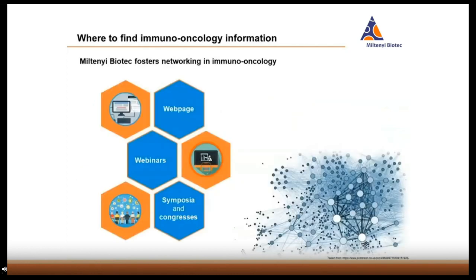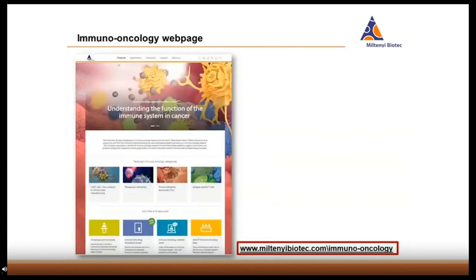The question is, where do you get all this information to find the optimal solutions for your immuno-oncology research? We have several info and contact points for you to choose from. Most importantly, there's our immuno-oncology website with all the immuno-oncology cell type and workflow categories. Furthermore, we have educative webinars that cover immuno-oncology topics in depth. And finally, you can meet us personally and talk directly to us at congresses and symposia. The main info hub of our immuno-oncology activities is our immuno-oncology landing page, accessible via www.miltenibiotech.com/immuno-oncology.